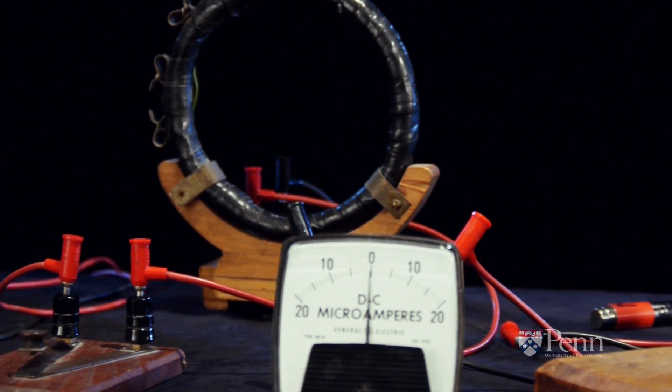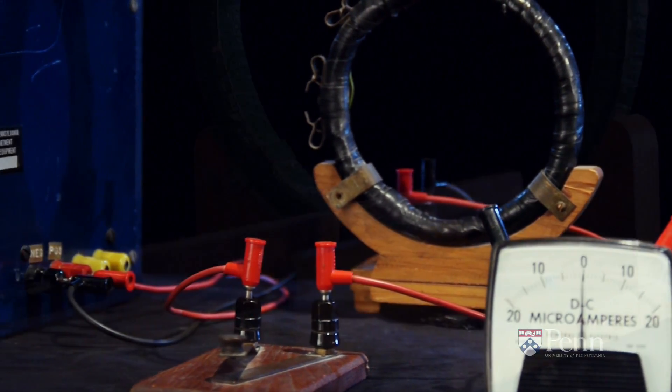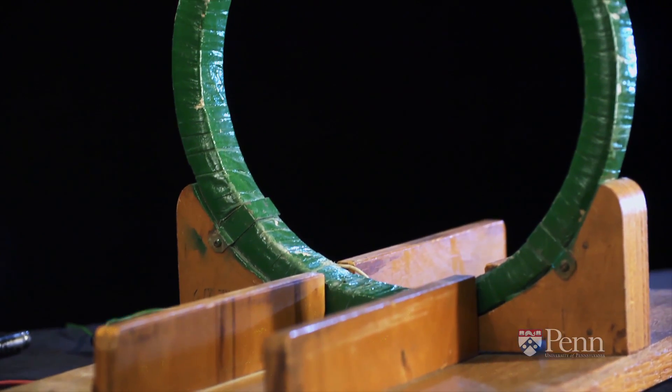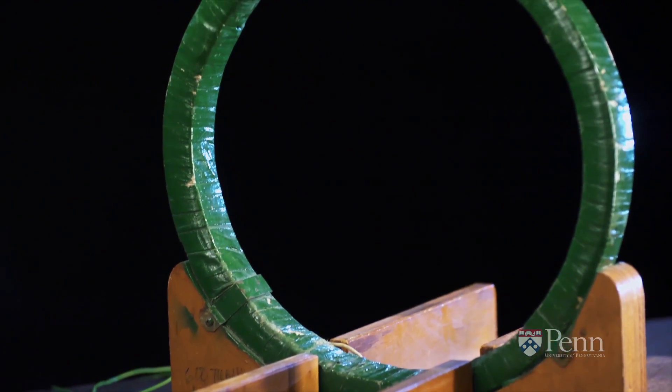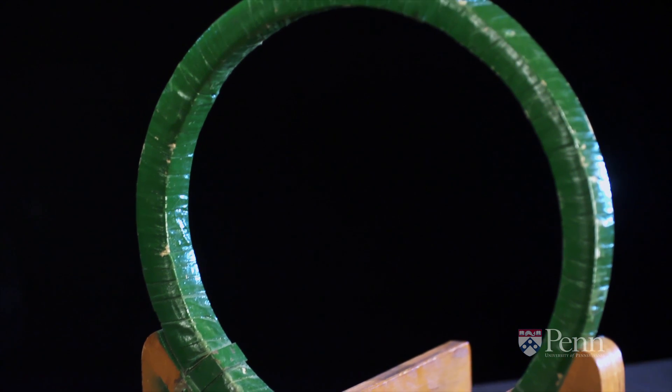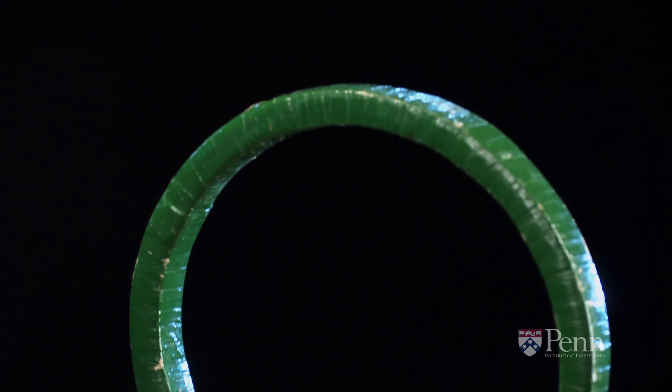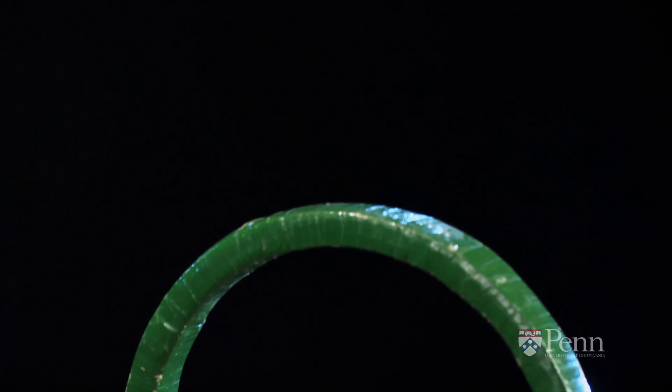We're going to have a look at Faraday's Law of Induction. For this demonstration, we've got a ring which consists of many turns of copper wire. Regrettably, it's covered with tape, so they're not visible.